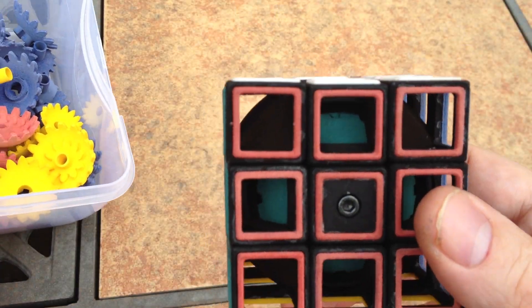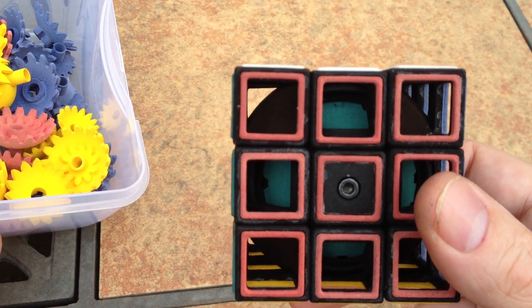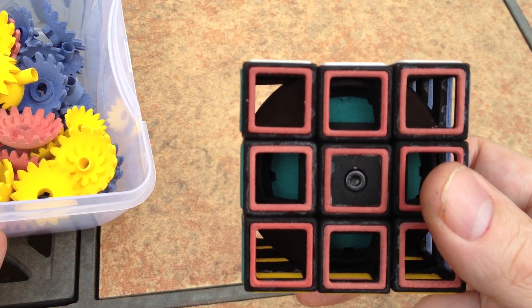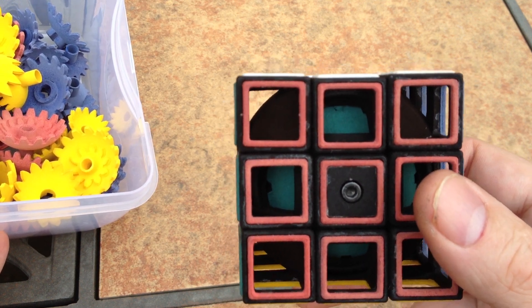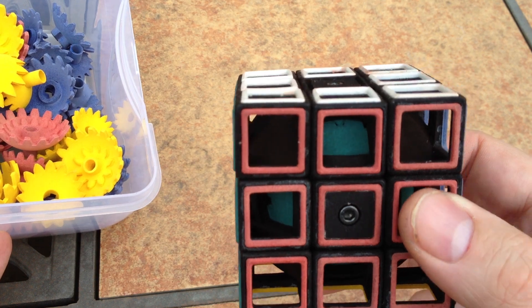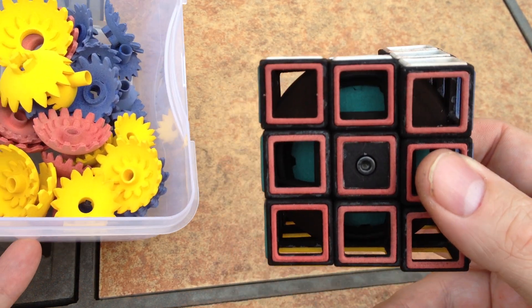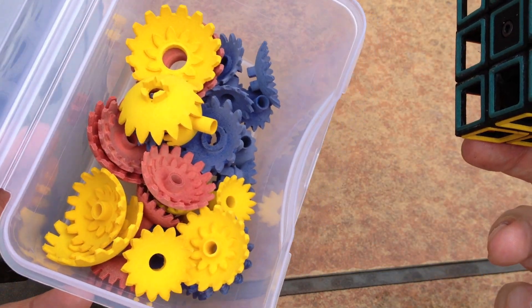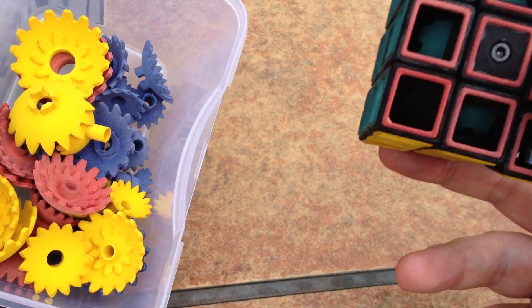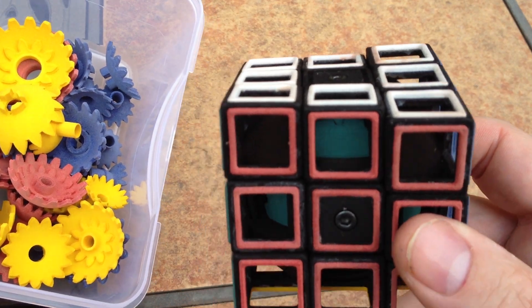You end up putting twelve gears in the cube at a time. Four gears for each spherical layer inside or the connection between two opposite faces. There's actually twelve green gears. I've got all twelve in here.